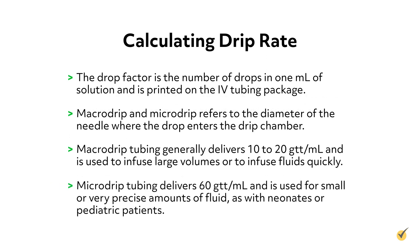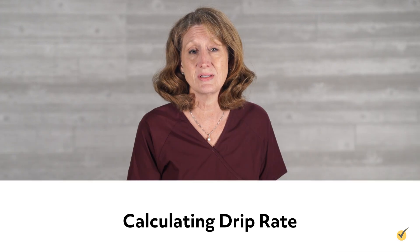Microdrip tubing delivers 60 drops per milliliter and is used for small or very precise amounts of fluid, as with neonates or pediatric patients.